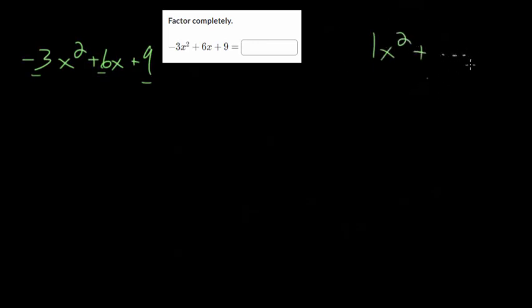We want the coefficient on x² to be one. It's probably the easiest thing to factor; it's a little bit harder when there is a negative coefficient on x². So I'll factor out this entire coefficient here, this -3.